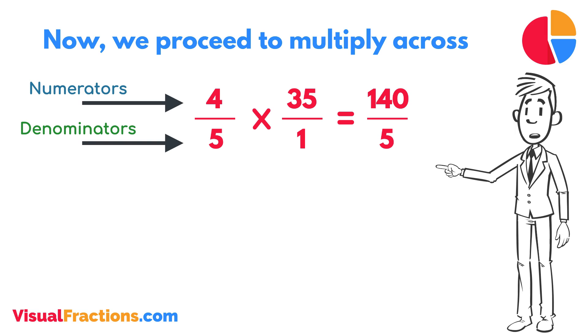To find the final answer, divide the numerator by the denominator. So, 140 divided by 5 equals 28.